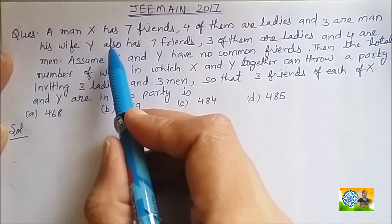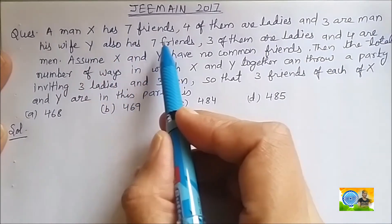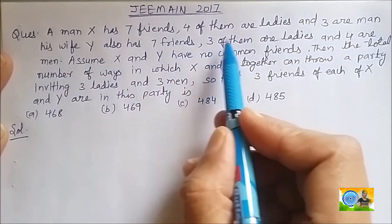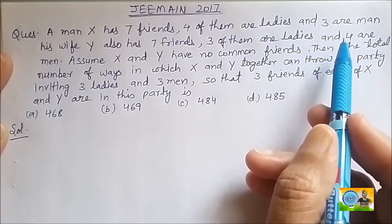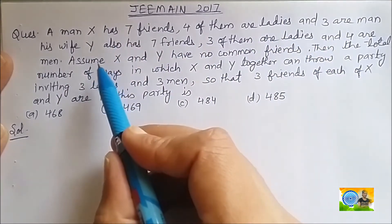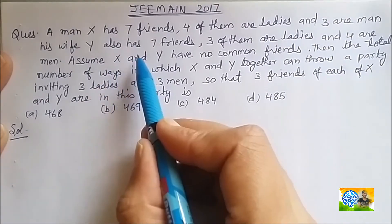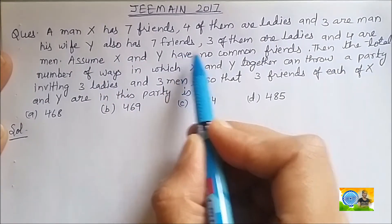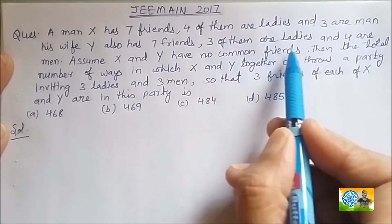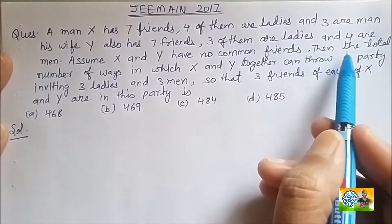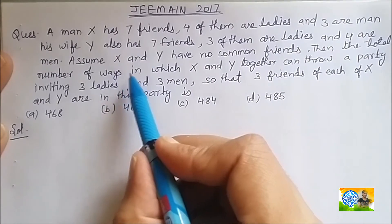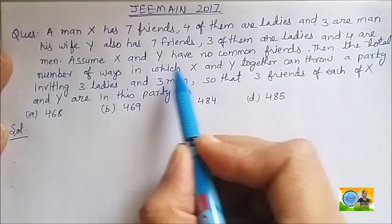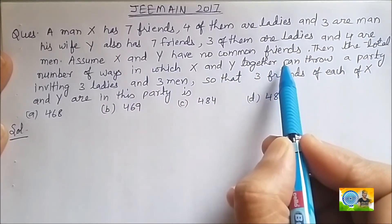A man X has 7 friends — 4 of them are ladies and 3 are men. His wife Y also has 7 friends: 3 of them are ladies and 4 are men. Assume X and Y have no common friends.